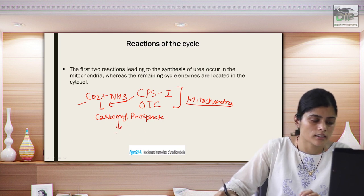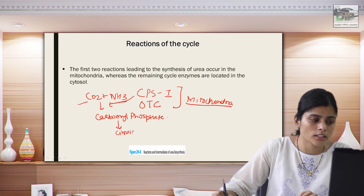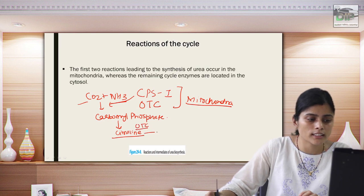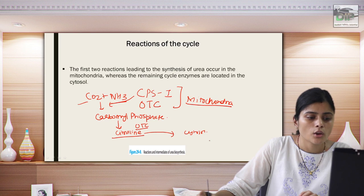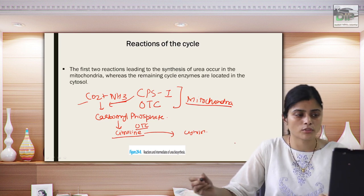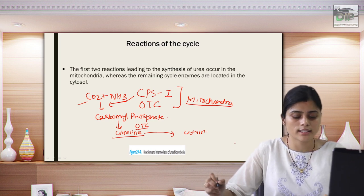In the first step, ammonia and carbon dioxide form carbamyl phosphate with the help of enzyme CPS1. This carbamyl phosphate, together with ornithine and the enzyme ornithine transcarbamylase, forms citrulline. This citrulline is then transported into the cytosol where further reactions of the urea cycle take place.